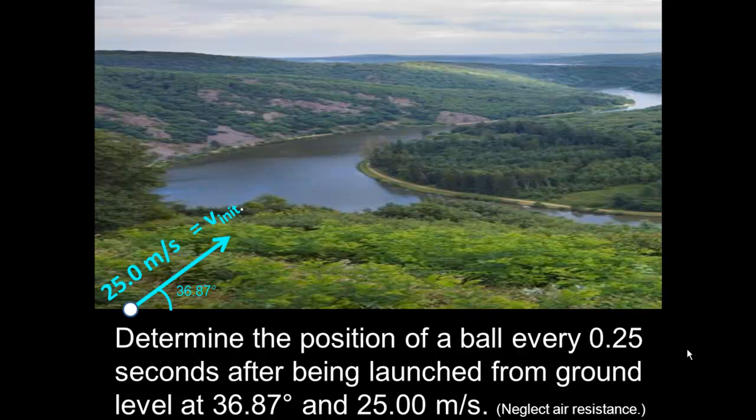We have a vector here indicating the initial velocity, the launch velocity of the ball. It's got a speed of 25 meters per second in a direction that's 36.87 degrees above the horizontal. Now, the first thing you need to do when you get your launch speed and direction - which together that's your launch velocity - is break it into its horizontal and vertical components.